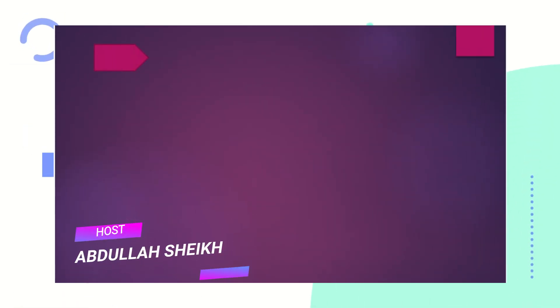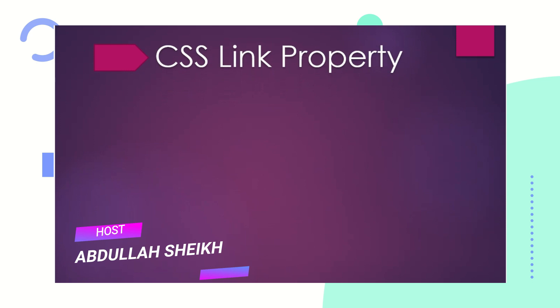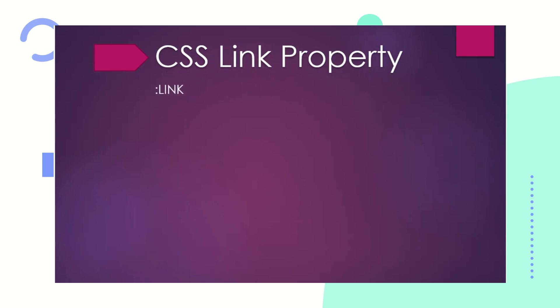Hello everyone, welcome back to another video of Code Prime. In this video we are going to learn the complete CSS link property. This property has four parts: the first one is link, the second one is visited, the third one is hover, and the fourth one is active. We are going to explain all four properties, how we can use them and how they affect your website.